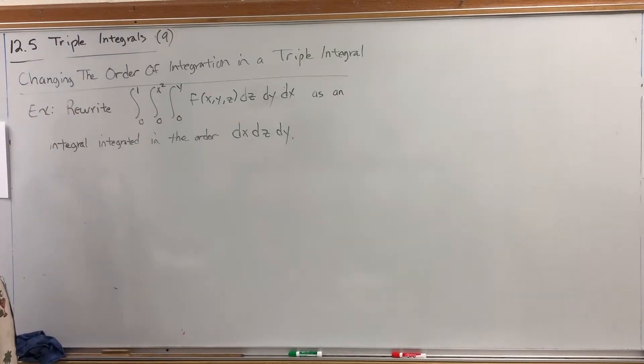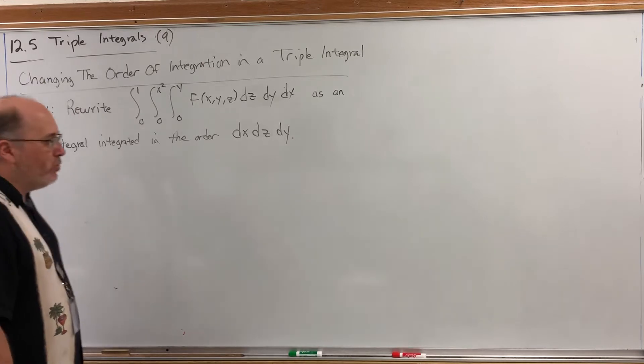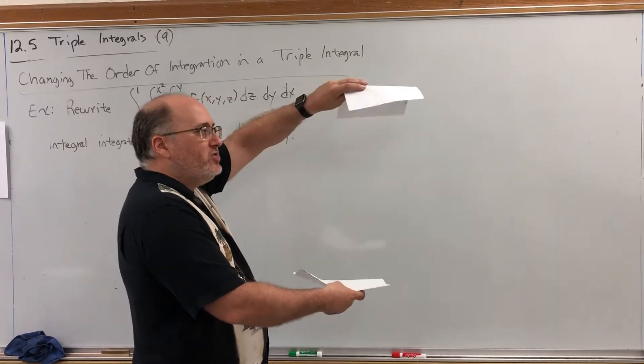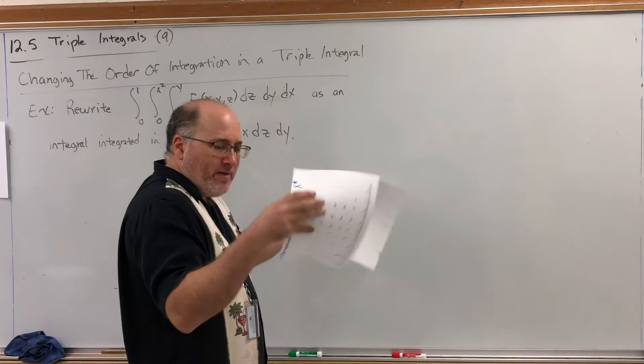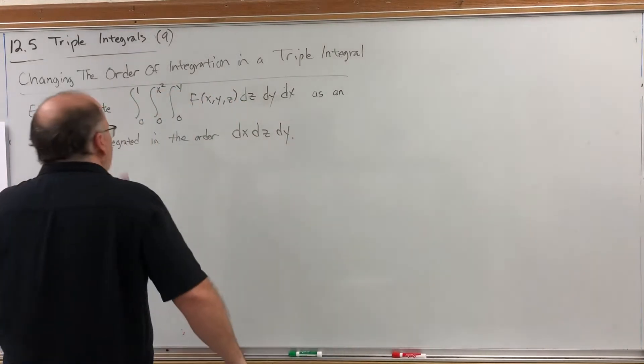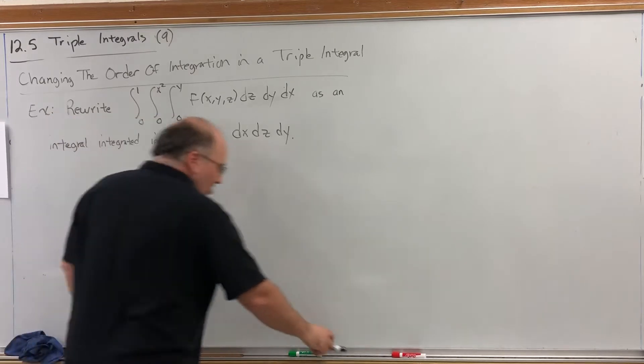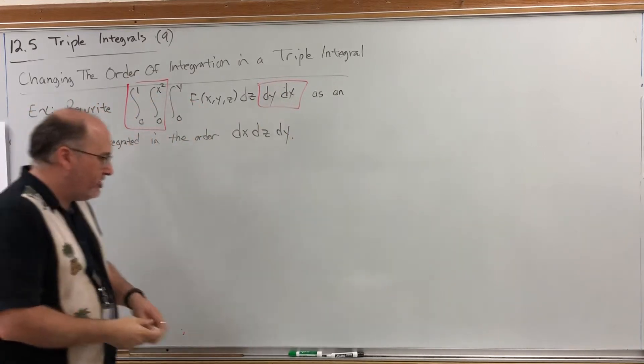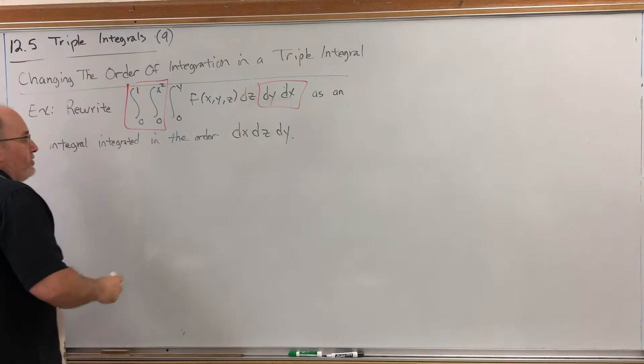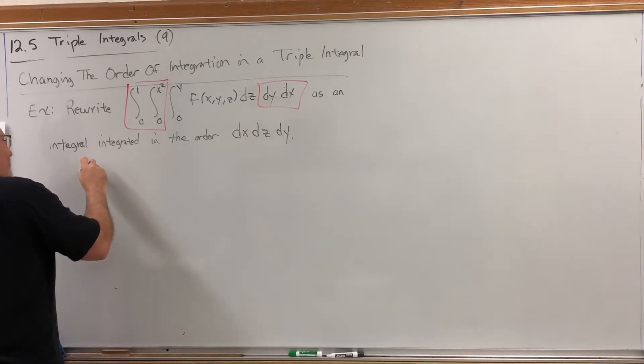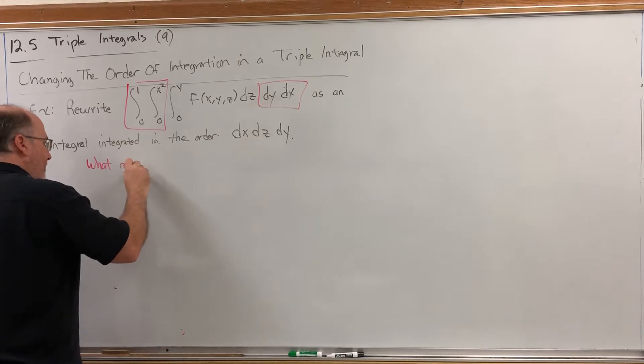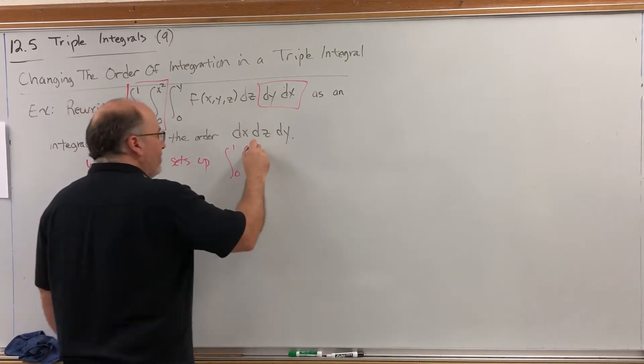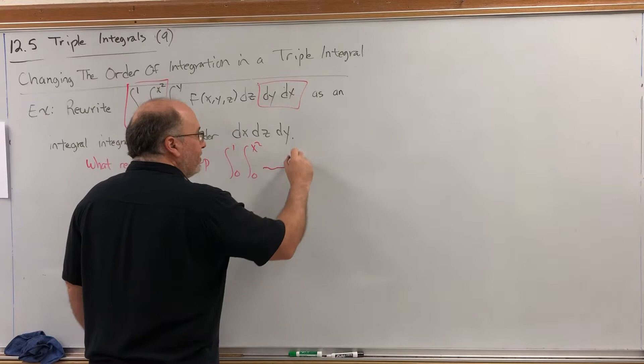So how do we do this? Well the whole setup on a triple integral is based on what the solid looks like and then deciding do I want to integrate it, think of it as bounded on top and bottom surfaces, left to right from surfaces, or front and back of surfaces. So let's reverse engineer this.